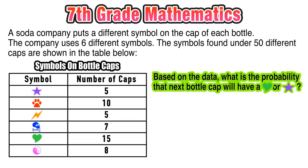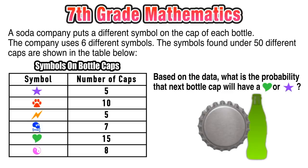In other words, if we pull one random bottle, what are the odds that that bottle has either the heart or the star as its symbol?